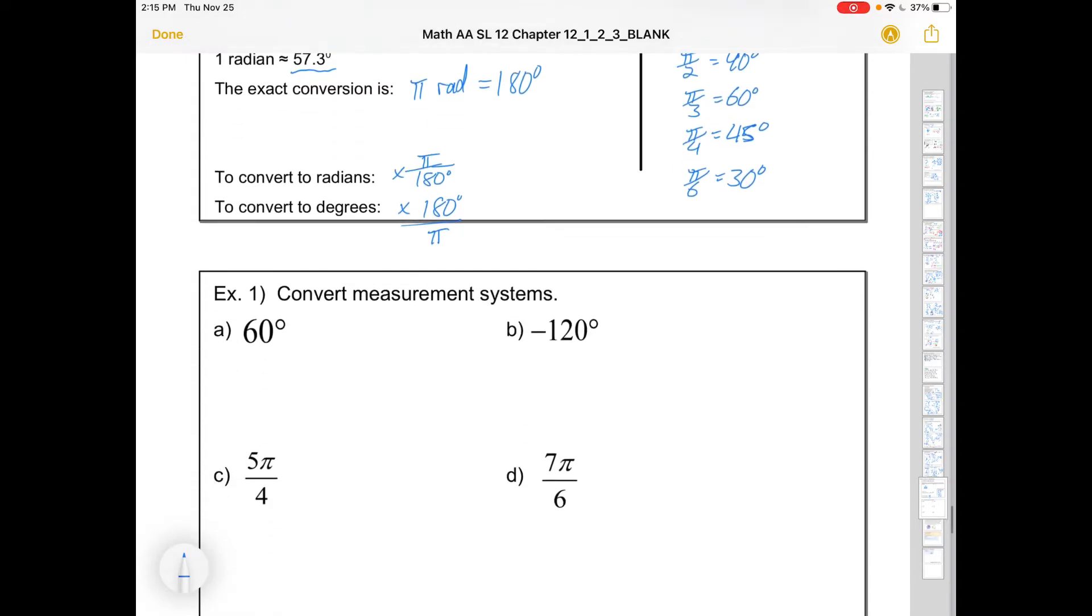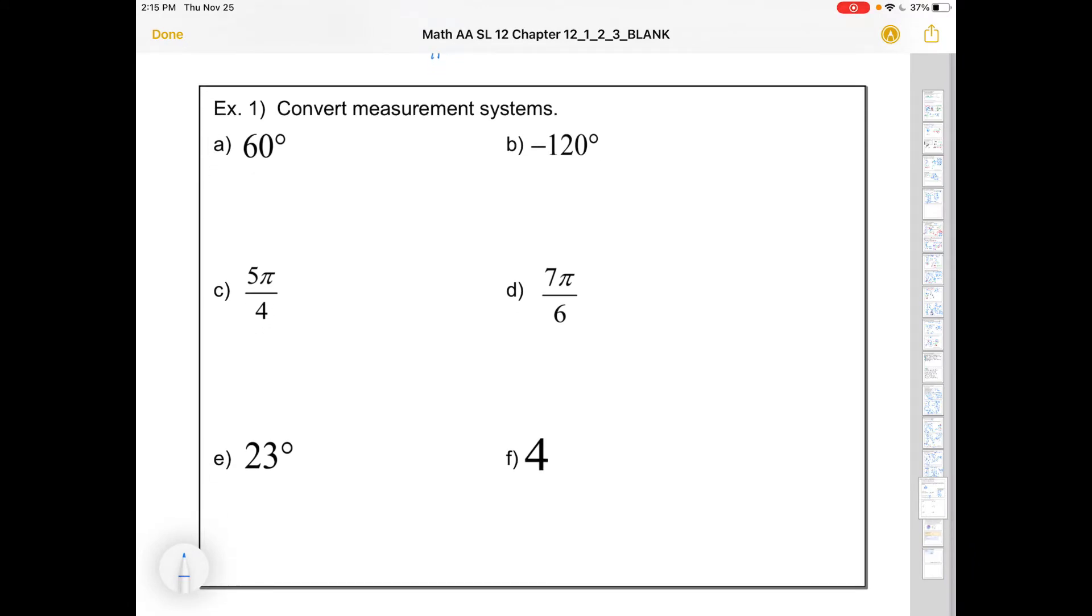We might want to convert measurement systems. There are two common ways. You could use a conversion factor, so 60 degrees times pi over 180 gives 60 pi over 180, which reduces to pi over 3. What might be slicker though would be to just say, oh that's one of my common angles, so it's pi over 3. In other words, 60 degrees is one third of 180, so in radians it's pi over 3.